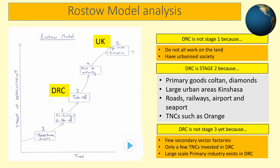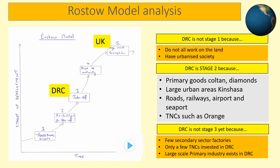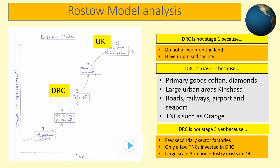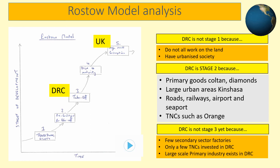It has also attracted a few large multinational TNCs such as Orange to invest there. The DRC has not yet managed to reach stage three take-off conditions, because it is too reliant upon primary industries with not enough secondary manufacturing established. Only a few global companies such as Orange are willing to invest in the DRC, which means it has yet to properly expand its economy. Pause the show and make sure you know exactly why the DRC is in stage two of the Rostow model, why it is not stage one, and why it has not yet reached stage three — you need to justify this for your exams.